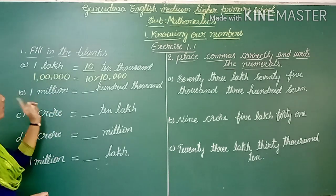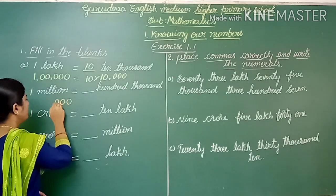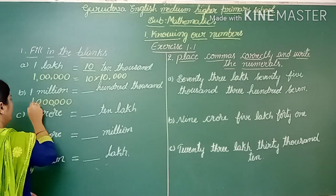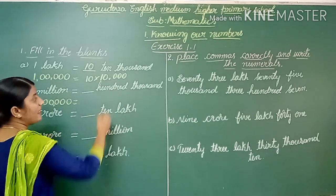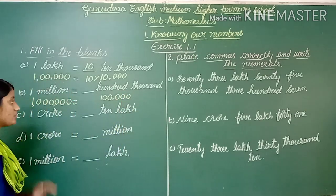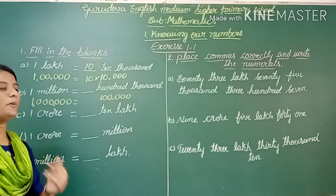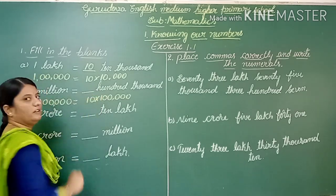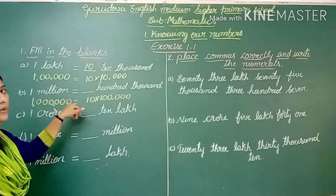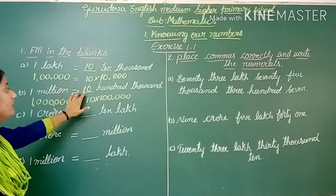Next, the second example: 1 million is equal to blank 100,000s. We write 1 million in numerals — 1,000,000, which has 6 zeros. In 100,000 there are 5 zeros, so we need to balance 1 more zero by multiplying by 10. So 10 × 100,000 equals 1 million.